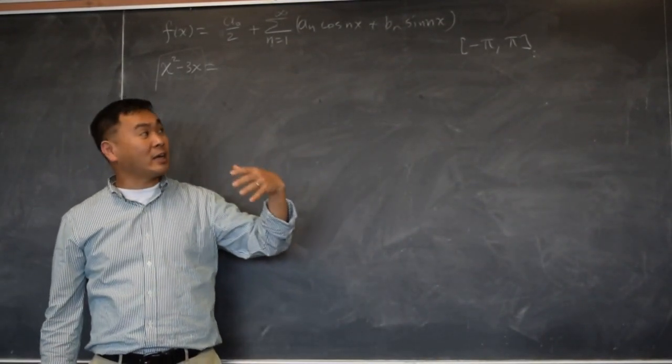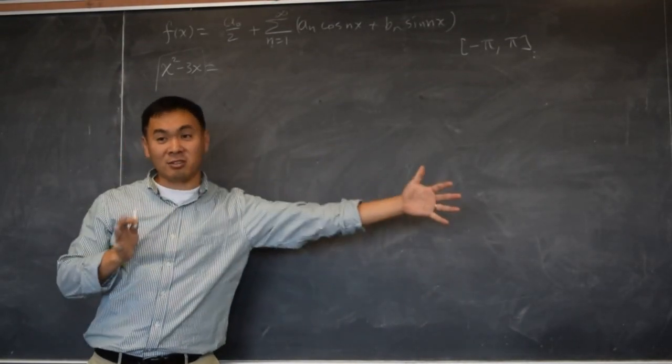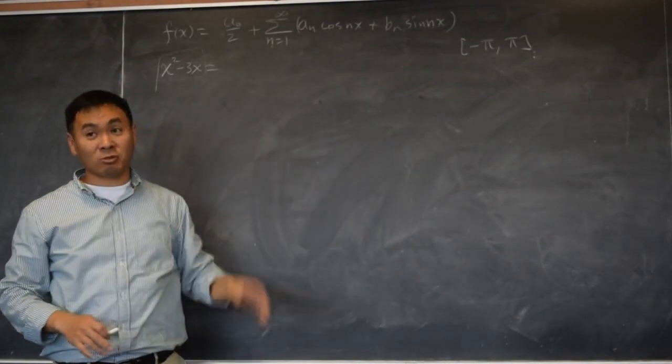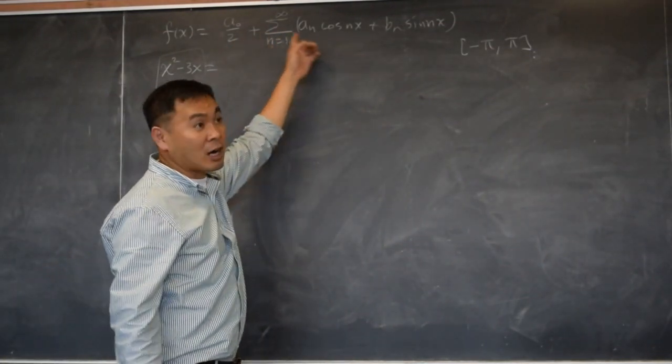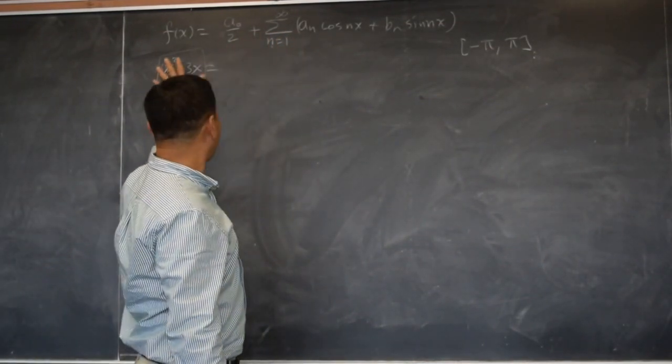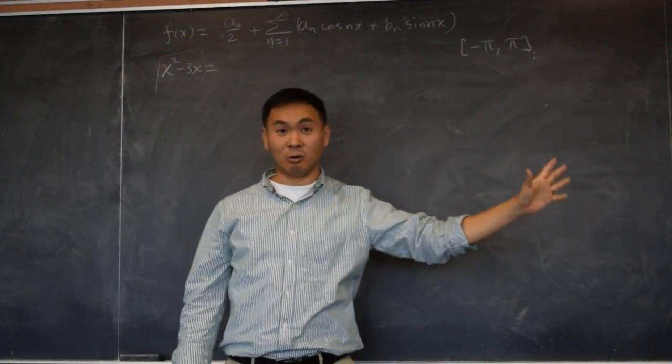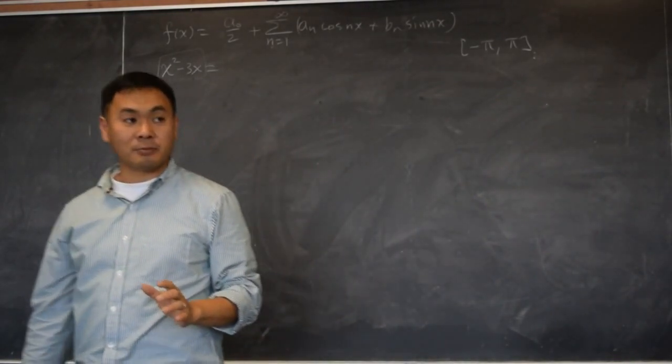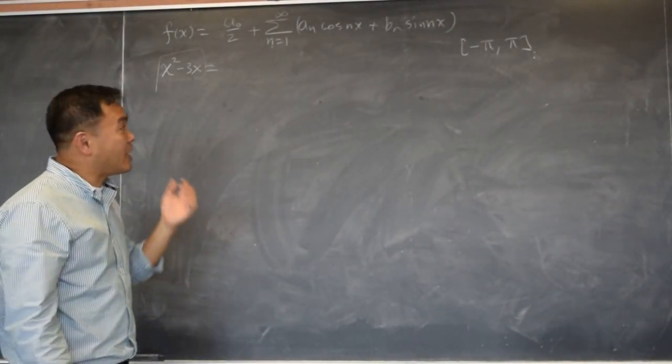The problem is right outside negative pi to pi, outside this interval, the two functions will be completely different because this is a periodic function, so whatever you have on this interval, they will be repeated over and over again.